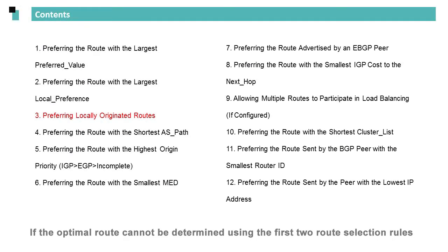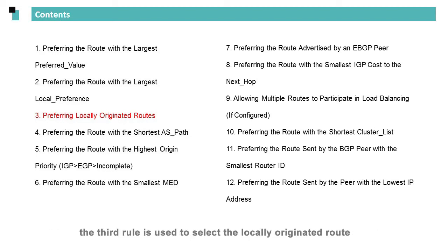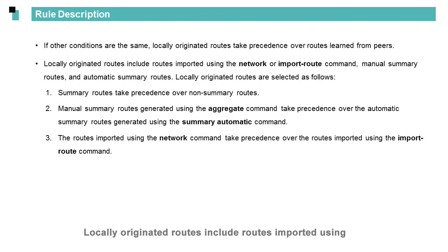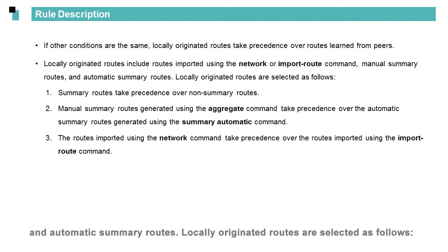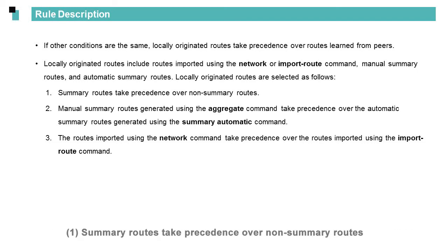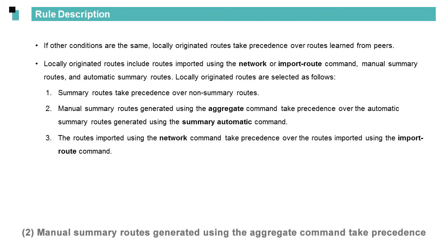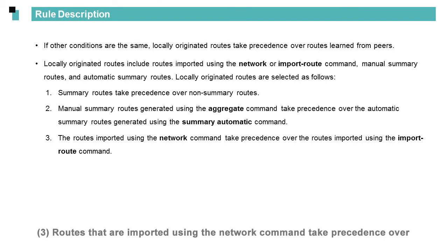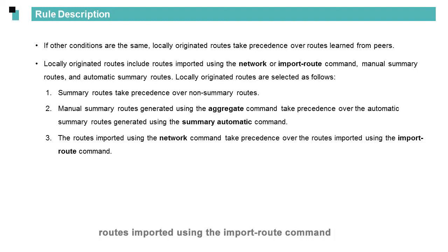If the optimal route cannot be determined using the first two route selection rules, the third rule is used to select the locally originated route. Locally originated routes include routes imported using the 'network' or 'import-route' command, manual summary routes, and automatic summary routes. Locally originated routes are selected as follows: summary routes take precedence over non-summary routes; manual summary routes generated using the 'aggregate' command take precedence over automatic summary routes generated using the 'summary automatic' command; and routes imported using the 'network' command take precedence over routes imported using the 'import-route' command.